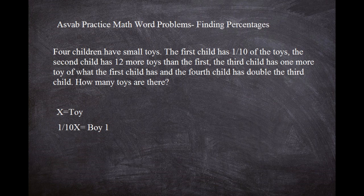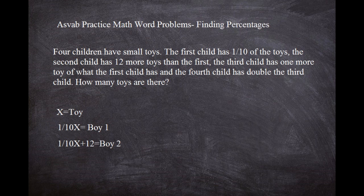The second child has twelve more toys than the first, so boy two has twelve more than boy one. We'll write that as one tenth X plus twelve. The third child has one more toy than what the first child has. The first child had one tenth X, so boy three has one more toy than boy one: one tenth X plus one.